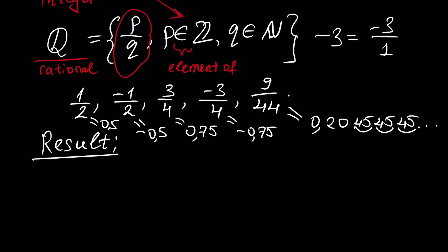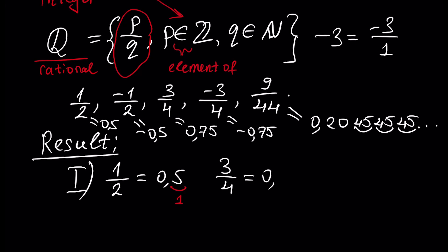Any rational number can be represented as a decimal number in one of two cases. The first case is that it has a finite number of digits in its decimal representation. For example, 1/2 is 0.5 — so it has 1 digit after the floating point. 3/4 is 0.75 — so it has 2 digits after the floating point, and so on.